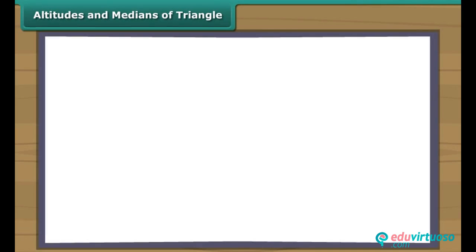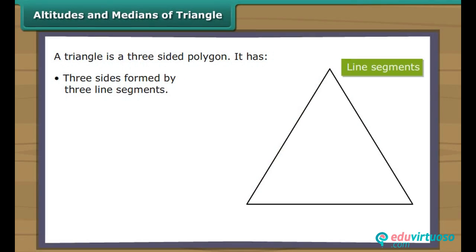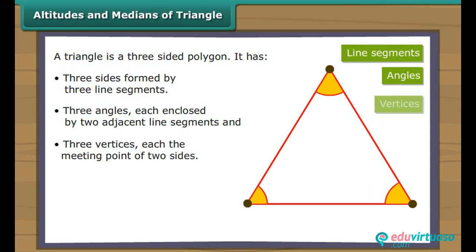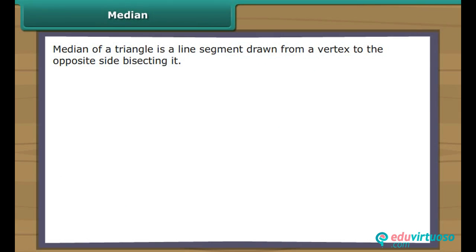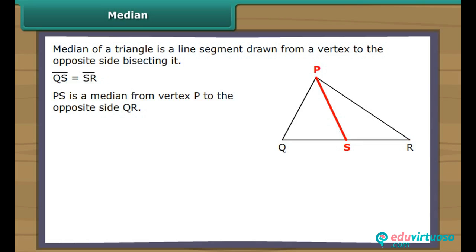Altitudes and medians of a triangle. A triangle is a three-sided polygon. It has three sides formed by three line segments, three angles each enclosed by two adjacent line segments, and three vertices — each the meeting point of two sides. A triangle also has medians and altitudes. The median of a triangle is a line segment drawn from a vertex to the opposite side, bisecting it. In the figure, line segment PS is drawn from vertex P to the opposite side QR, dividing QR into two equal halves. Therefore, PS is a median from vertex P to the opposite side QR.